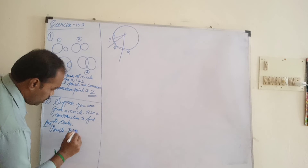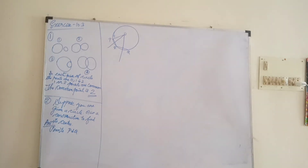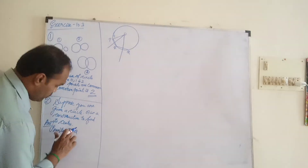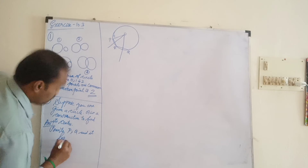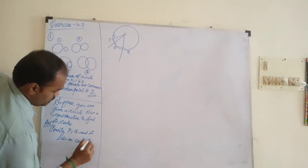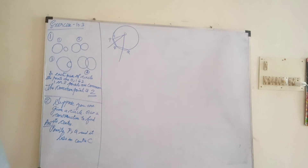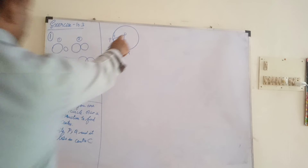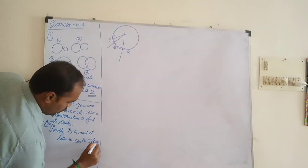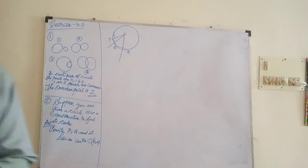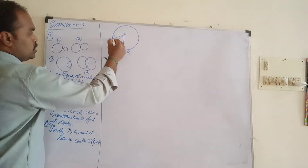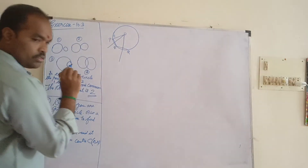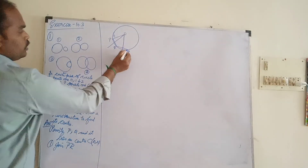P and Q are points, and they lie on the circle. The center C is the center of the circle. The center of the circle is O, and R means radius. So now I have mentioned: join PR and QR.